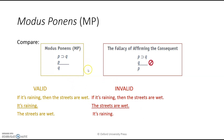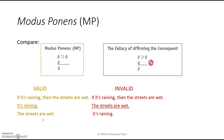Here's a valid modus ponens argument: If P, then Q. But P. Therefore Q. Here's a concrete example: If it's raining, then the streets are wet. That's 'if P, then Q.' But it is raining — that's P. Therefore, it follows that the streets are wet. That is a valid argument.